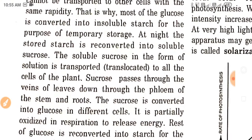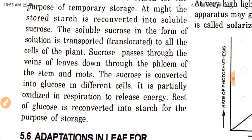Sucrose passes through the veins of leaves, down through the phloem of the stem and roots. The sucrose is converted into glucose in different cells. It is partially oxidized in respiration to release energy. The rest of the glucose is reconverted into starch for the purpose of storage.